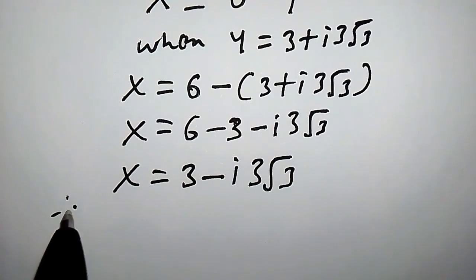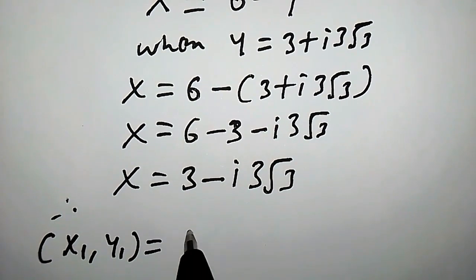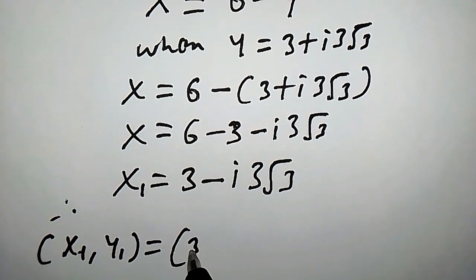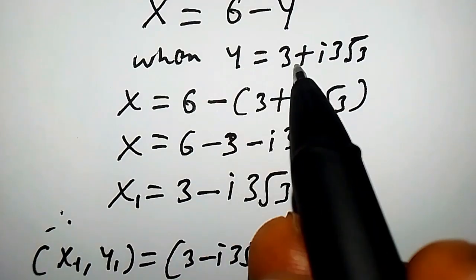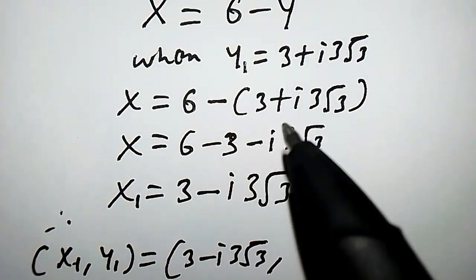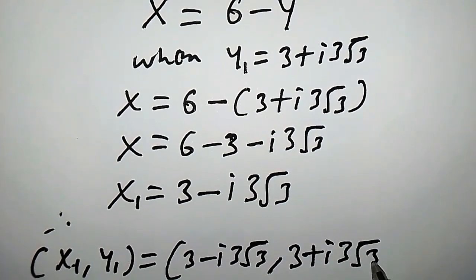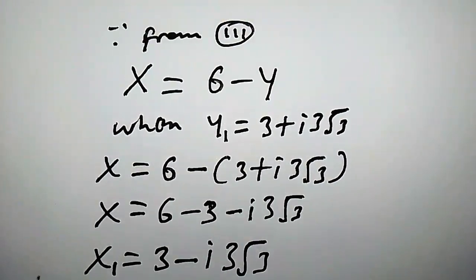Therefore the first solution is x₁ comma y₁, which equals 3 minus i times 3 root 3, comma 3 plus i times 3 root 3. This is the first solution for the system of two equations.